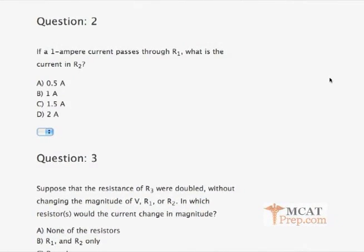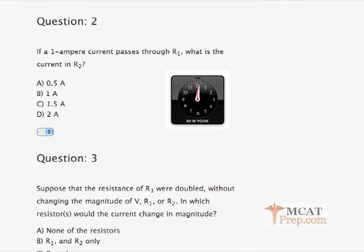Question 2. If a 1 ampere current passes through R1, what is the current in R2? Keep in mind from question 1 that R1 is 3 ohms, R2 is 1.5 ohms, R3 is 1 ohm. You'll have 30 seconds, but if you need more time, press pause. Begin now.